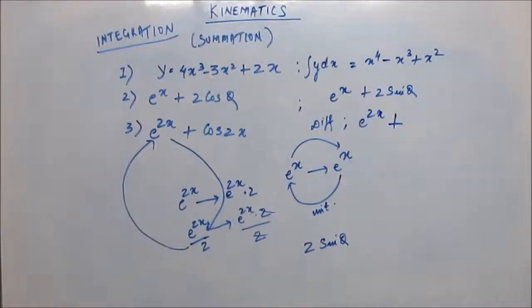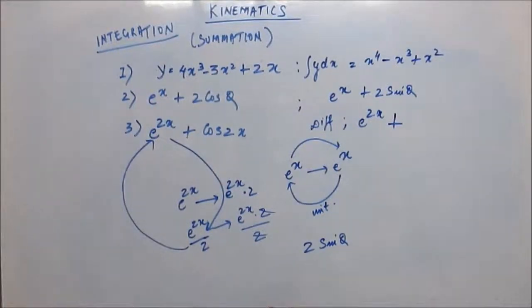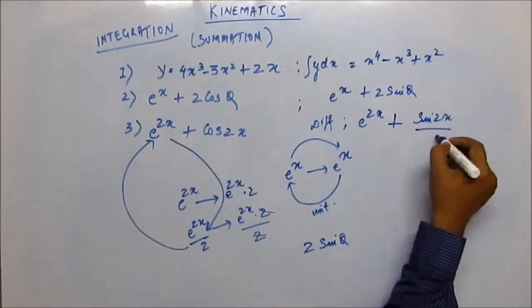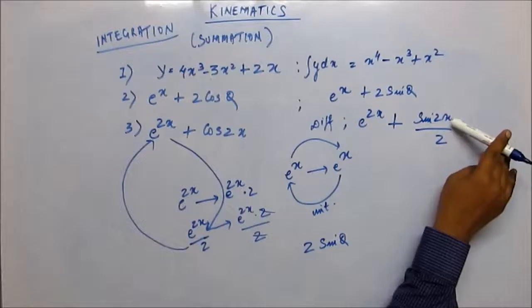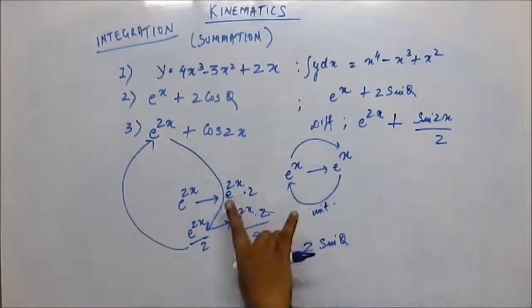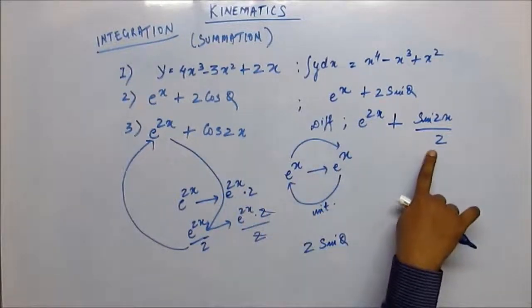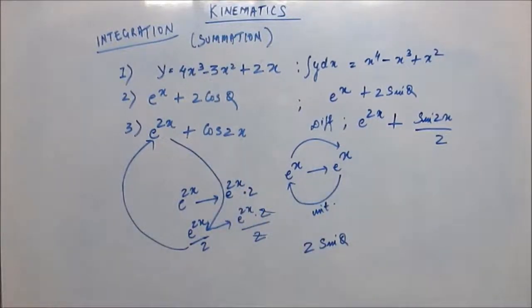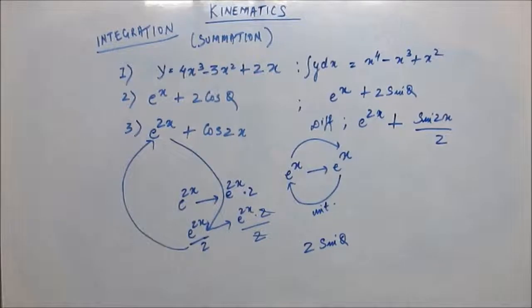Now, what would you differentiate to get cos(2x)? You would differentiate sin(2x)/2. If you differentiate sin(2x)/2, the derivative gives cos(2x)·2 divided by 2, so you get cos(2x). So if you integrate cos(2x), you get back sin(2x)/2, because integration is the reverse of differentiation. That was the basic practice of integration.